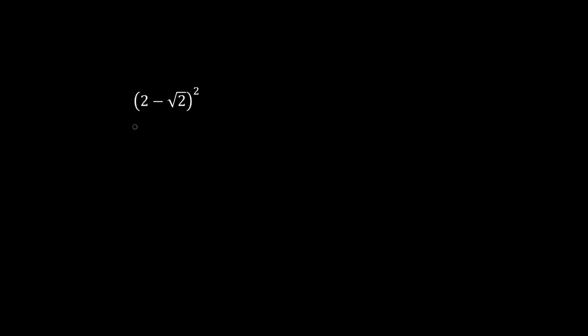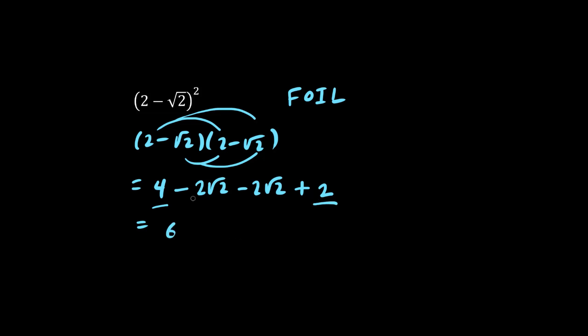Let's expand and simplify. 2 minus root 2 squared. We can write this out twice. 2 minus root 2 times 2 minus root 2. And we'll use FOIL, first, outer, inner, last. First, we have 2 times 2 is 4. Outside, we have 2 times negative root 2, which is minus 2 root 2. Inside, we have minus 2 root 2 again. And last, we have negative times negative is positive. Root 2 times root 2 is just root 4 or just 2. What is 4 plus 2? We have 6. And then minus root 2 minus 2 root 2 is minus 4 root 2. This here is our answer.